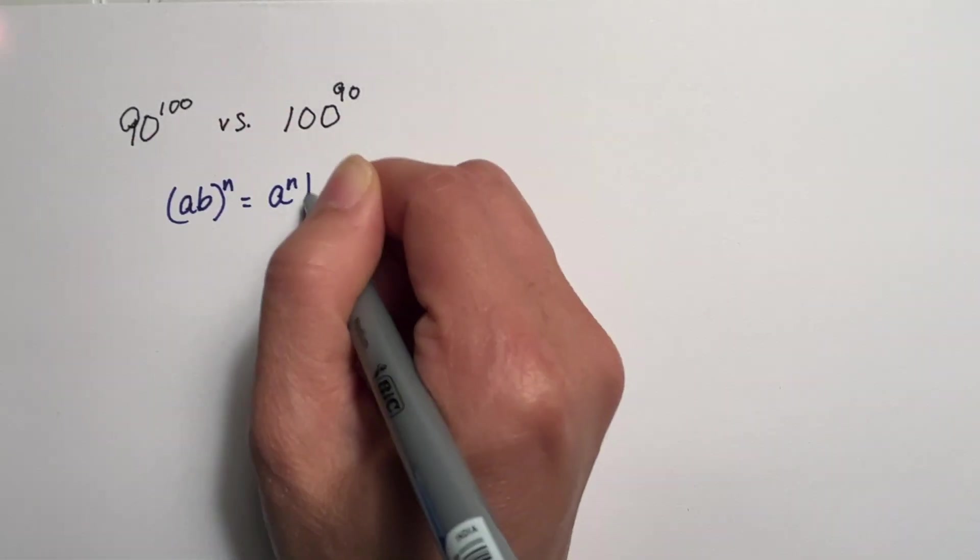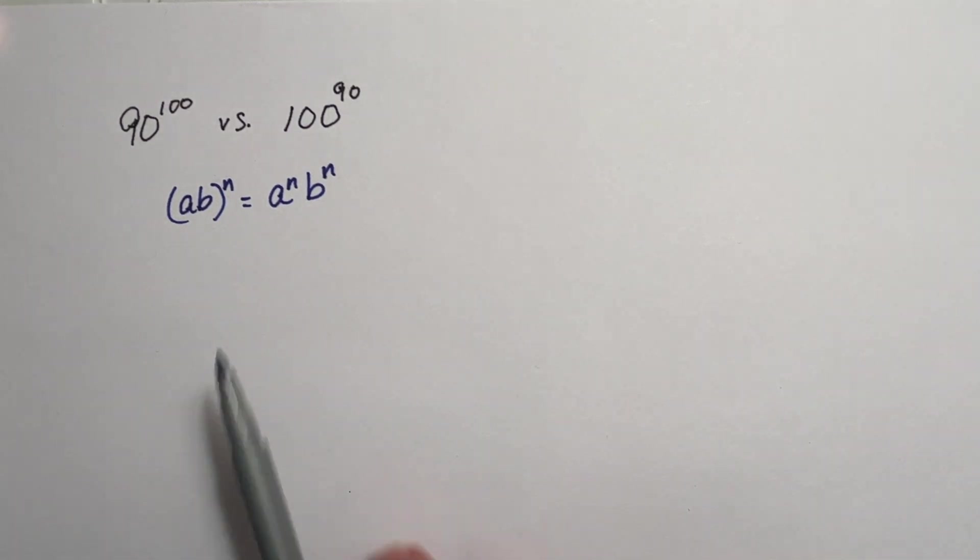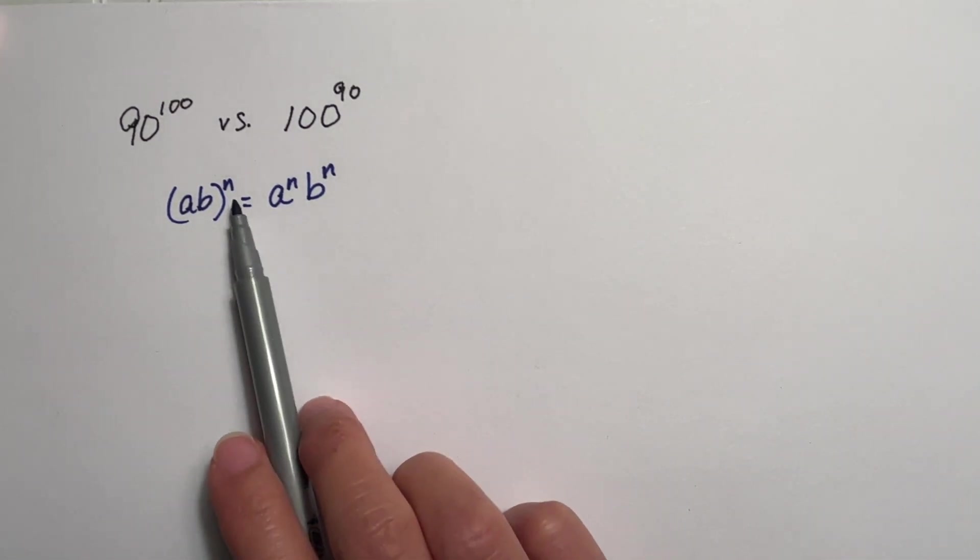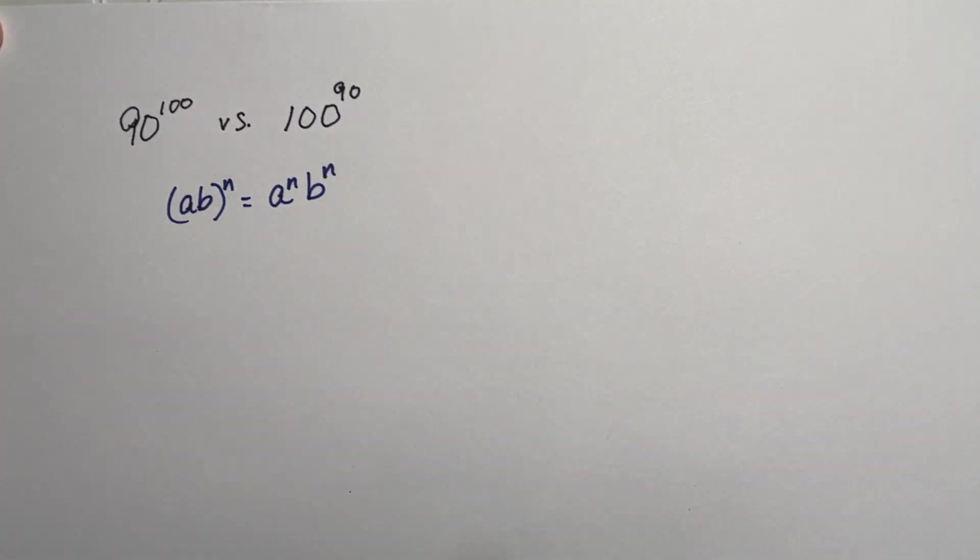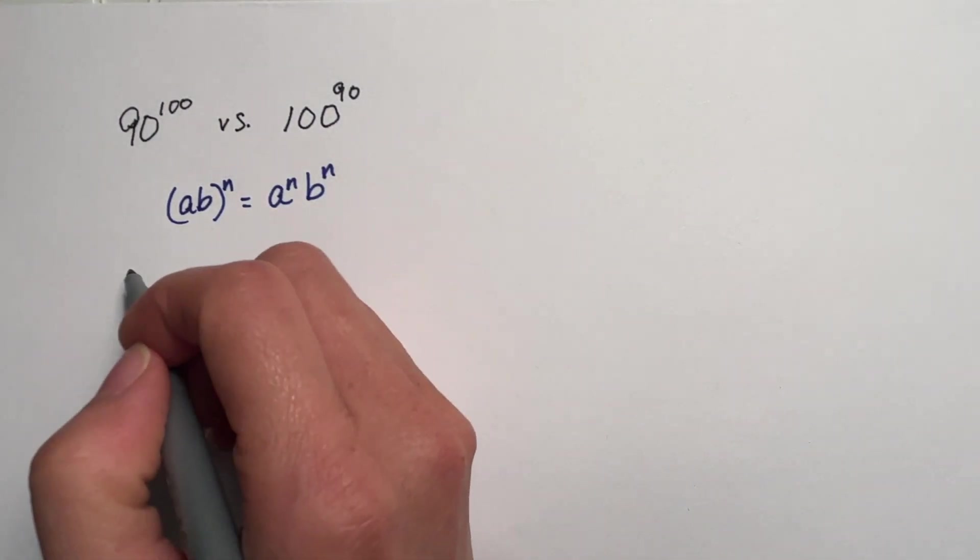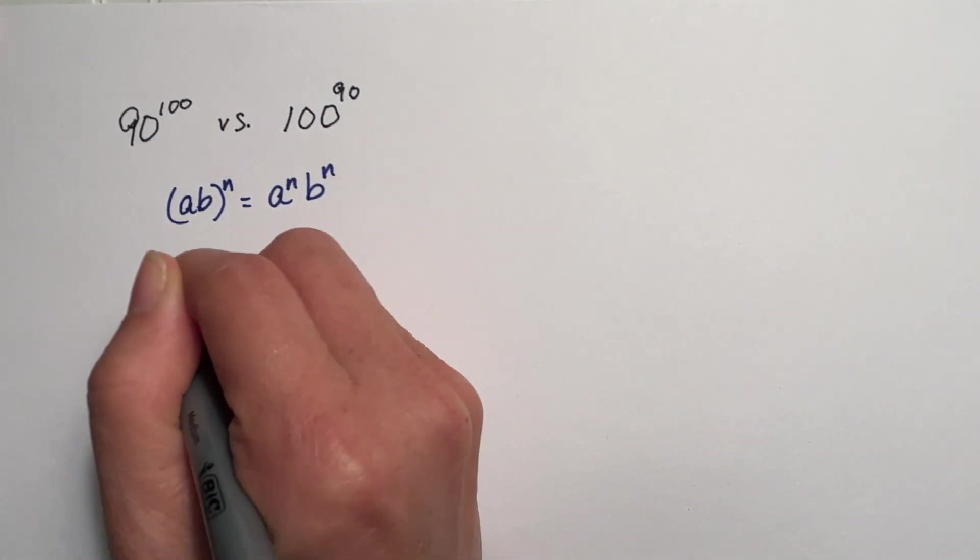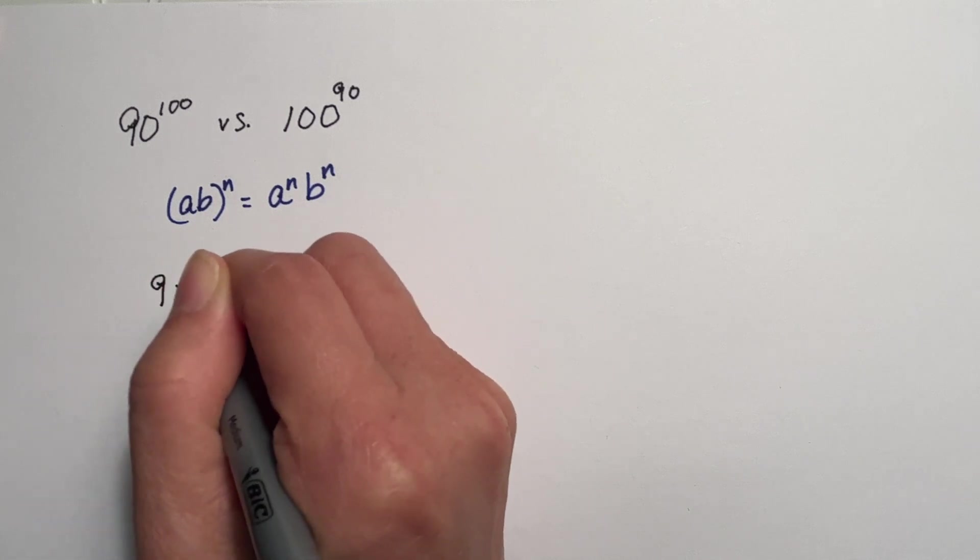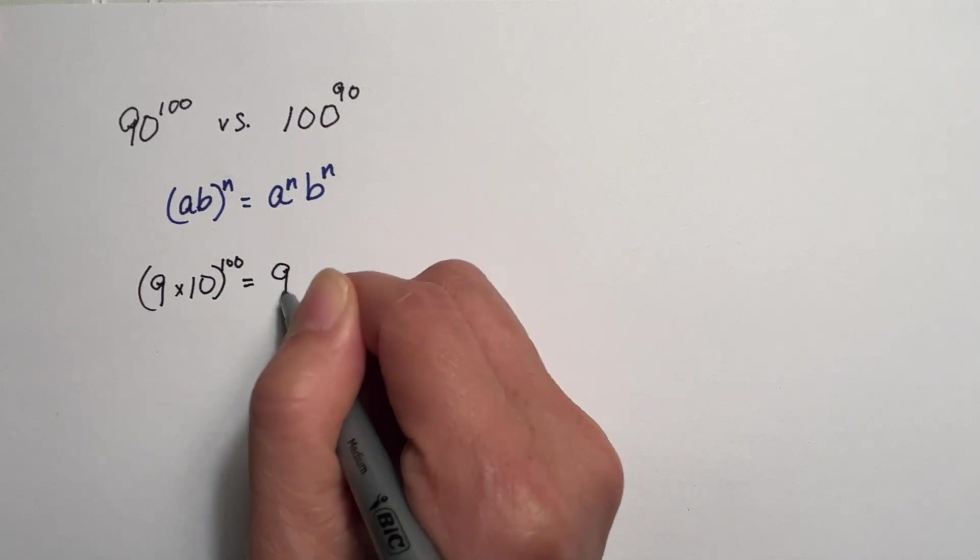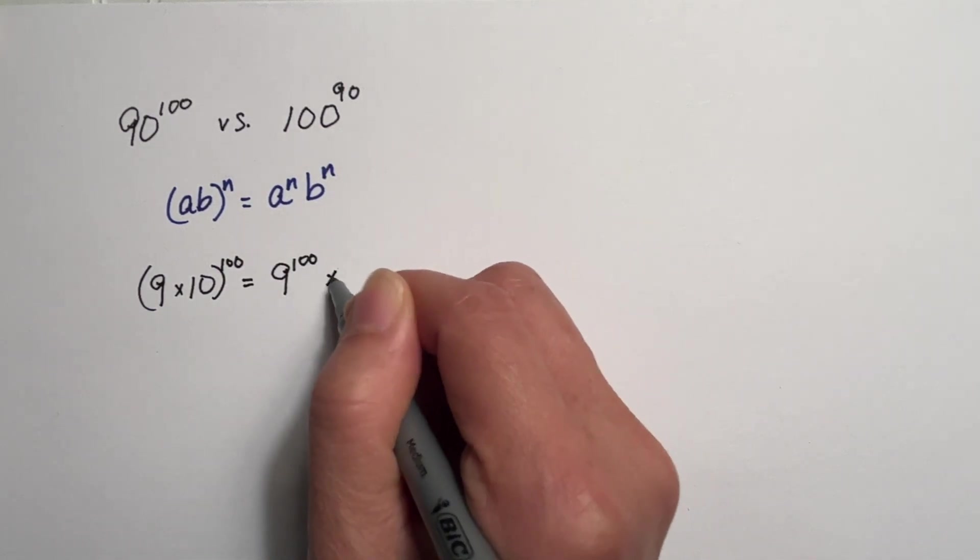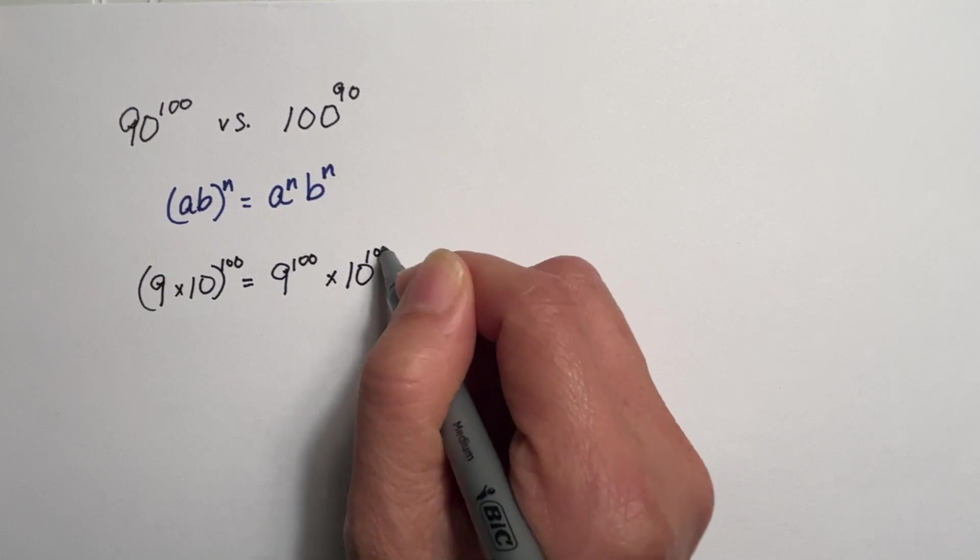To do this, let's use this formula: a times b raised to the n is equal to a to the n times b to the n. So 90 will become 9 times 10 raised to the 100. That is equal to 9 raised to the 100 times 10 raised to the 100.